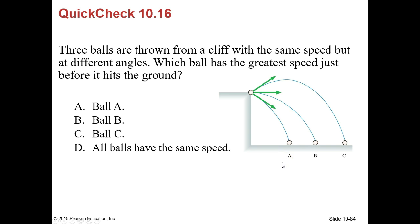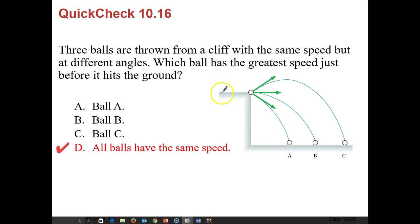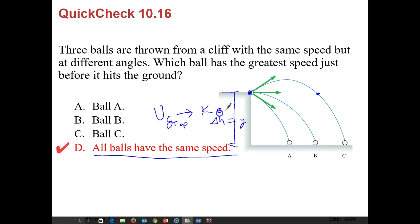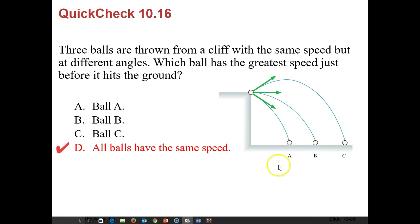Quick check 10.16: three balls are thrown off a cliff with the same speed but at different angles. Which ball has the greatest speed before hitting the ground? Since all three start at the same height, they all undergo the same change in y. Their gravitational PE at the top converts to the same kinetic energy at the bottom, so all three hit the ground with the same speed.